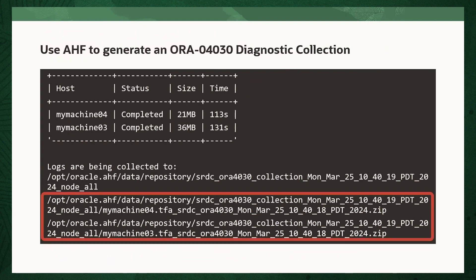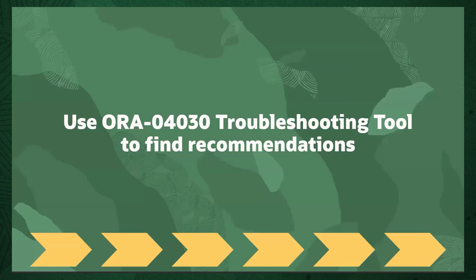It's worth noting that in this example, although AHF has generated a zip file for each machine, most of the time you're only going to need the zip from the machine where the problem occurred.